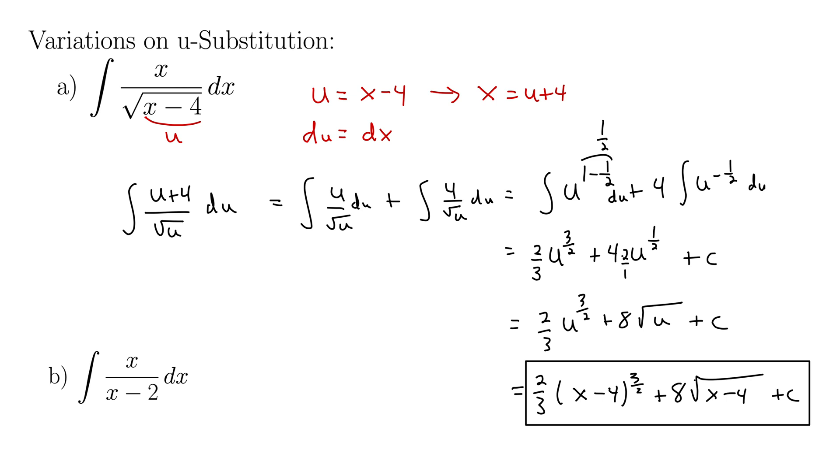Let's try part b. We have the integral of x over x minus 2, dx. So see if you can pull this off, try using the same method, this variation on u substitution, to evaluate this integral. Pause the video, and then we'll compare notes.